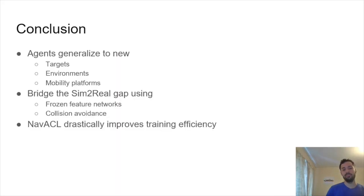So to conclude, our agents are able to generalize to new targets, new environments, and surprisingly even new mobility platforms. We were able to help bridge the sim-to-real gap using frozen feature networks and collision avoidance. Finally, we used NAVACL to drastically improve the training efficiency and make all this possible.